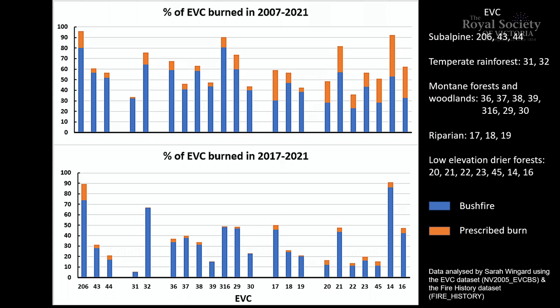Looking at ecological vegetation classes — different environments in eastern Victoria — the blue part of this graph shows the percentage of each different EVC that's been burned within a certain time period, the top graph being for the last 15 years. Blue is due to bushfire, orange is due to prescribed burns. The prescribed burning, particularly in the drier forests — the ones on the right, the lower elevation ones — has been adding quite substantially to the amount of fire in those forests.